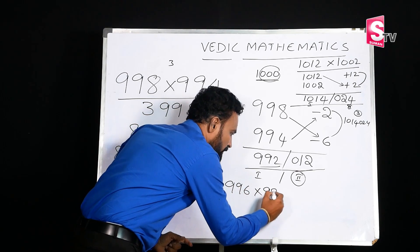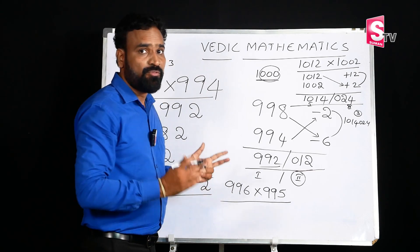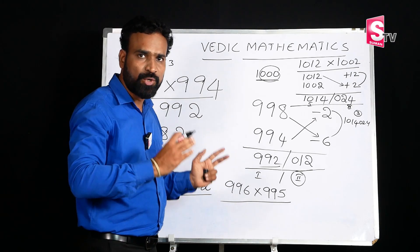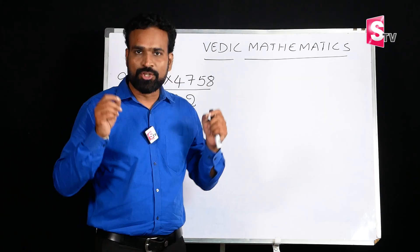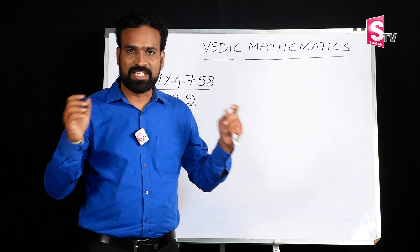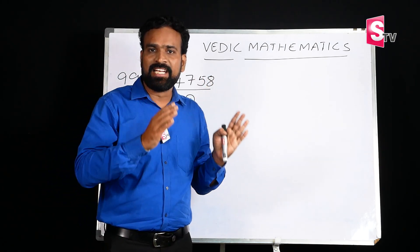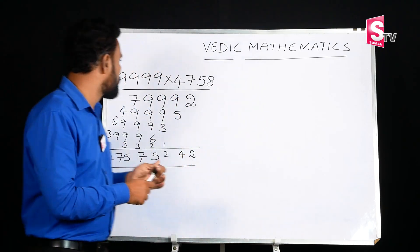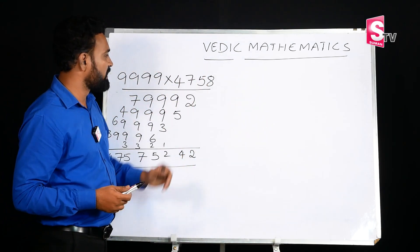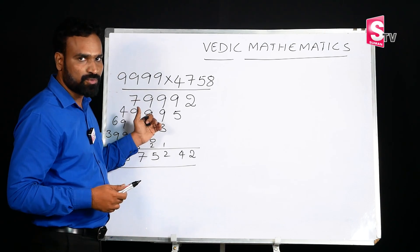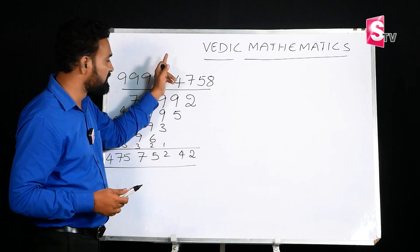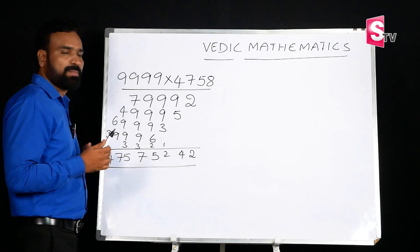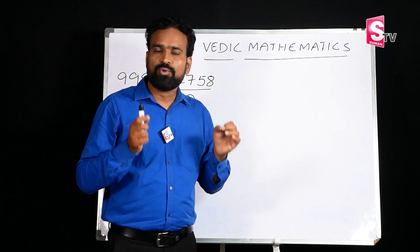Practice problem: 996 into 995 — write your answer in the comment section. Now, for numbers like 9, 99, 999, we use the Nikhilam method for quick results. Let's try 999 into 4758. Using the school method, students would take about one minute. But Vedic Mathematics gives the answer in a maximum of 2 to 3 seconds.